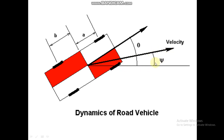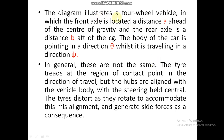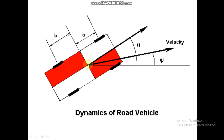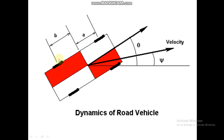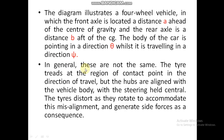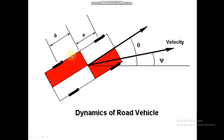This diagram illustrates a four-wheel vehicle in which the front axle is located at a distance 'a' ahead of the center of gravity and the rear axle is at a distance 'b' aft of the center of gravity. The body of the car is pointing in a direction theta while it is traveling in a direction psi — meaning the hub is oriented in direction theta, but the vehicle is actually moving at angle psi.